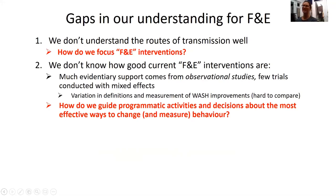In reality, most programs focus on the well-defined medical S and A elements of SAFE, but F and E interventions required to achieve outcomes are less well defined. We have two key gaps in our understanding of these F and E components: first, we don't know which route is most important for transmission from eye to eye, making it difficult to know which interventions to develop; and second, even when we develop interventions, we don't know how good they are. Most evidence comes from observational studies with great variation in definitions and measurement of WASH improvements.